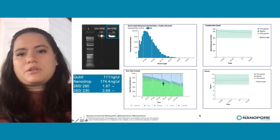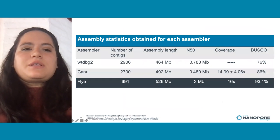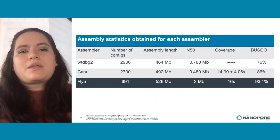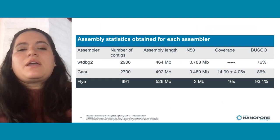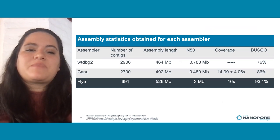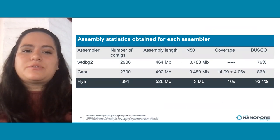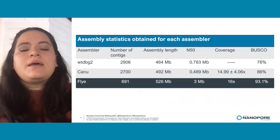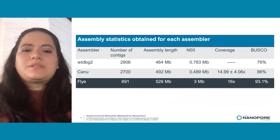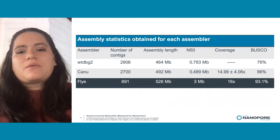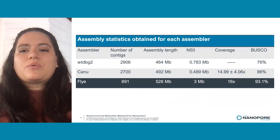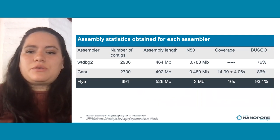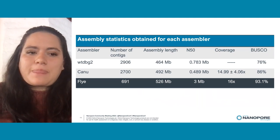We constructed a table of the main assembly statistics for each assembler used. As we can see, Flye has the best statistics: 691 contigs, an assembly length of 526 megabases, an N50 of 3 megabases, and a coverage of 16x, which is higher compared to the other assemblers.